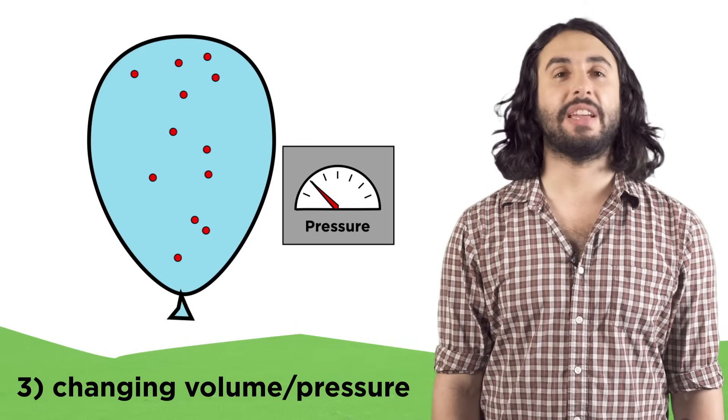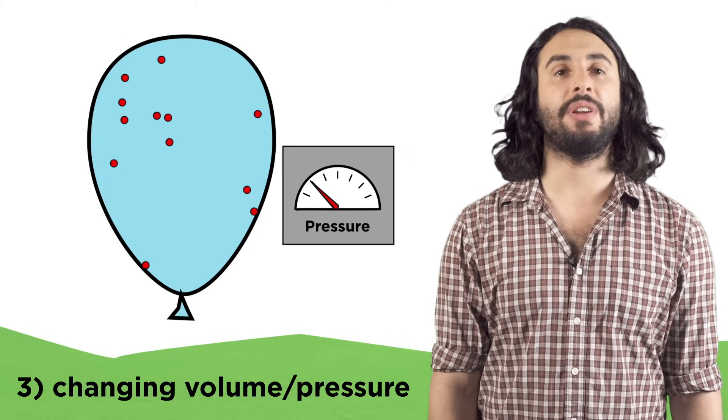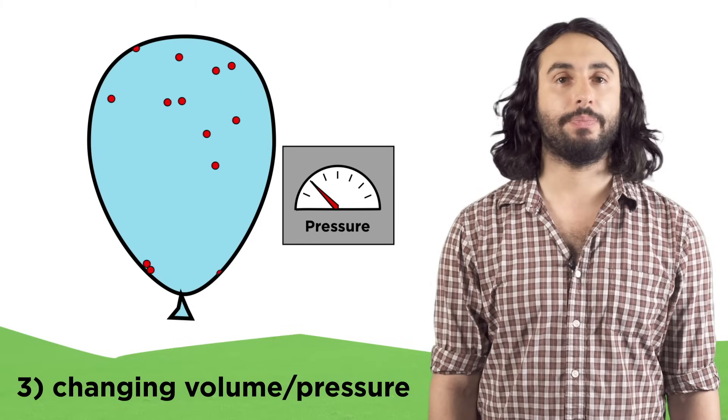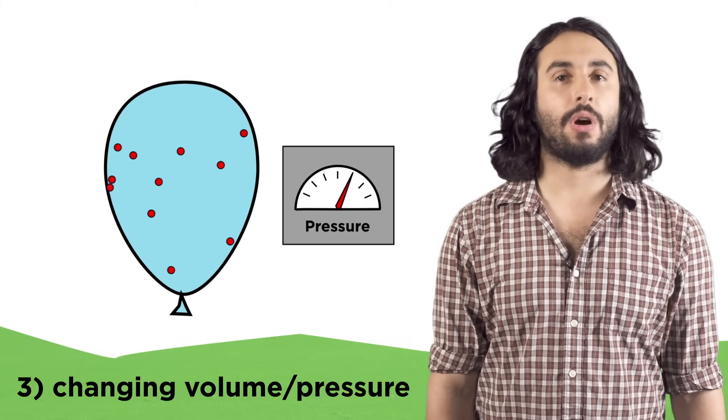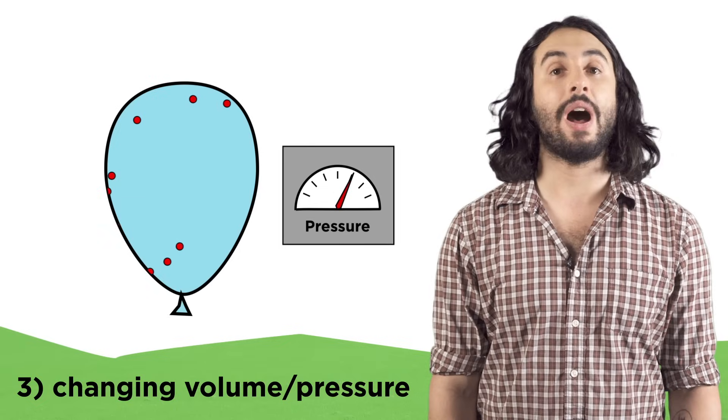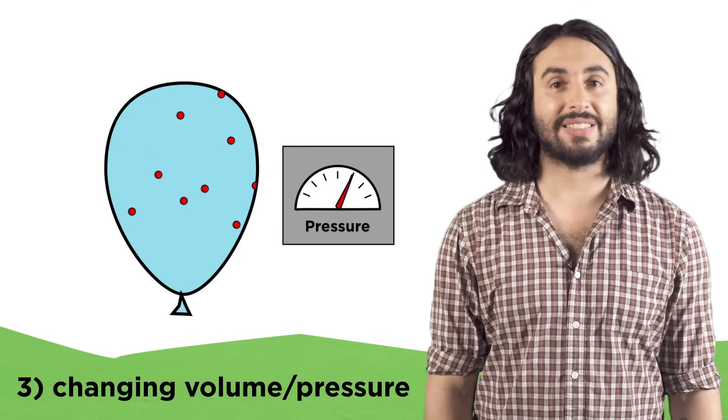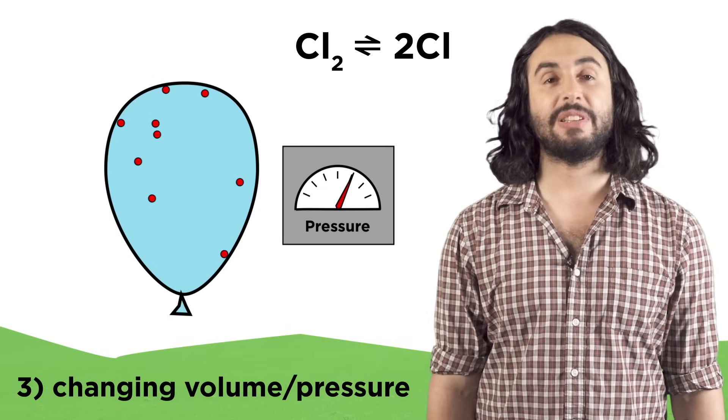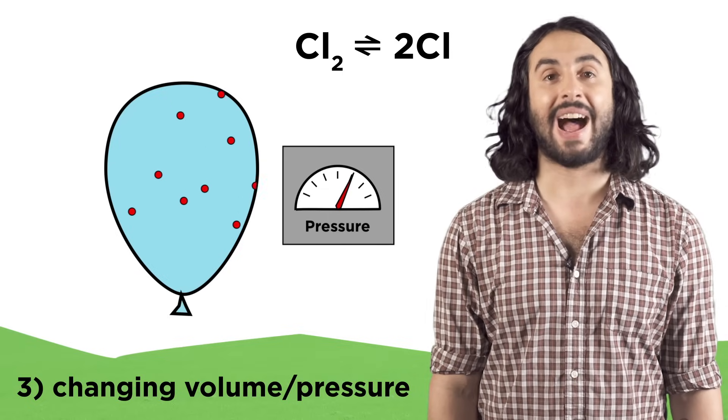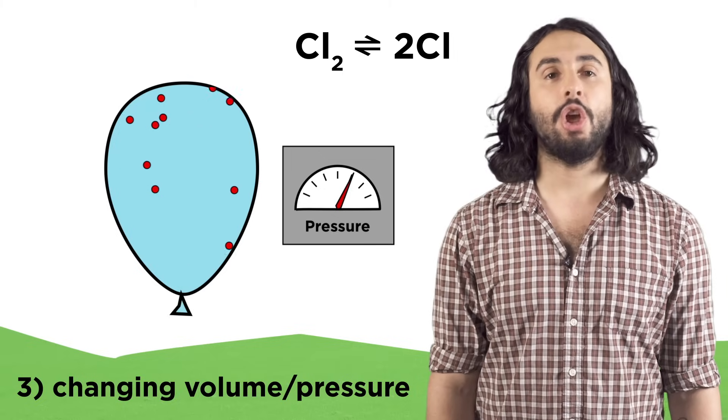The third stress we can examine is changing the volume or pressure. Let's say the equilibrium involves gases in a balloon. What if we decrease the volume? If we remember Boyle's law, we know that the pressure will go up since the smaller the volume, the more the particles will hit the sides and exert pressure.